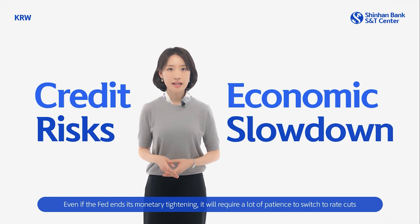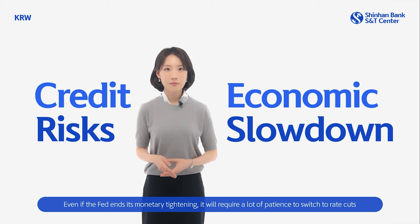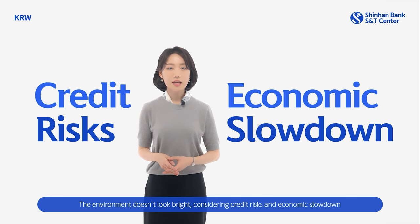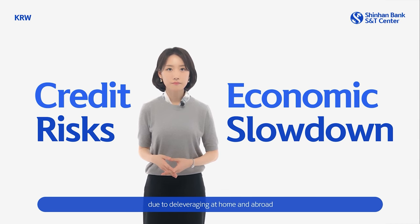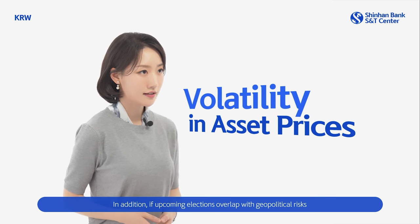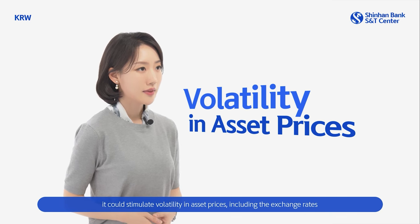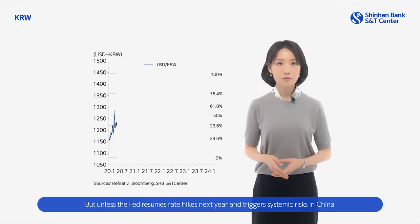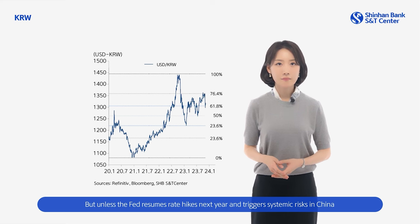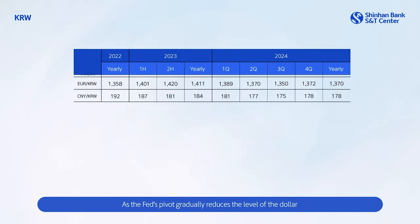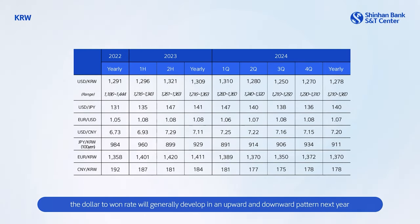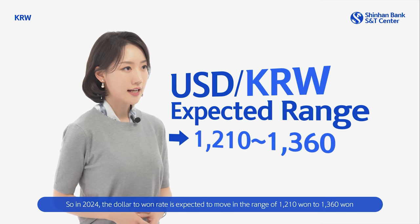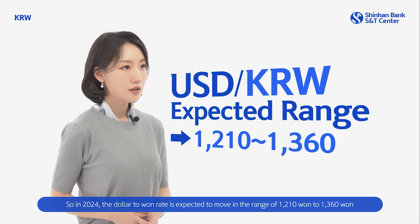Even if the Fed ends its monetary tightening, it will require a lot of patience to switch to rate cuts. The environment doesn't look bright, considering credit risk and economic slowdown due to deleveraging at home and abroad. In addition, if upcoming elections overlap with geopolitical risk, it could stimulate volatility in asset prices, including exchange rates. But unless the Fed resumes rate hikes next year and triggers systemic risk in China, it's unlikely that the won will soar back to the 1,400 won level as before. As the Fed's pivot gradually reduces the level of the dollar, the dollar-to-won rate will generally develop in an upward and downward pattern next year due to Korea's export recovery, trade surplus, and relative merit in the global economic cycle. In 2024, the dollar-to-won rate is expected to move in the range of 1,210 to 1,361 won.